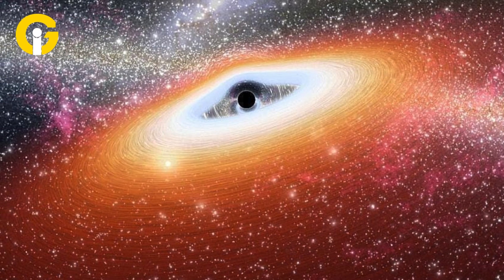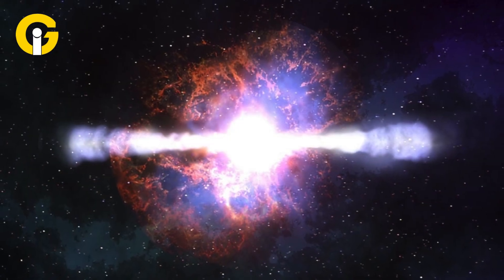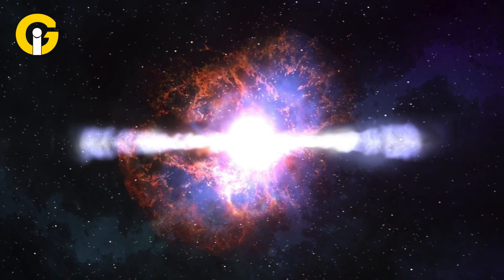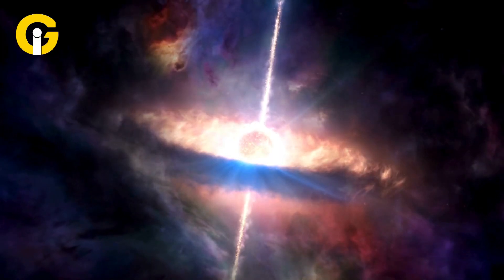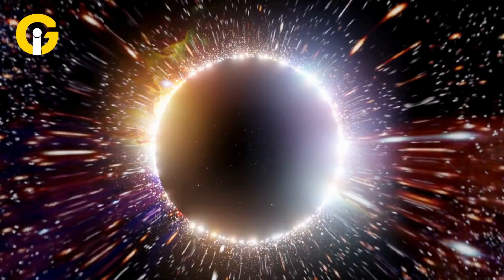The surrounding accretion disk and background stars appear distorted, like looking through a funhouse mirror. As you get closer, the swirling light from the stars and gas around the black hole gets brighter, like the roar of a racing car getting louder.